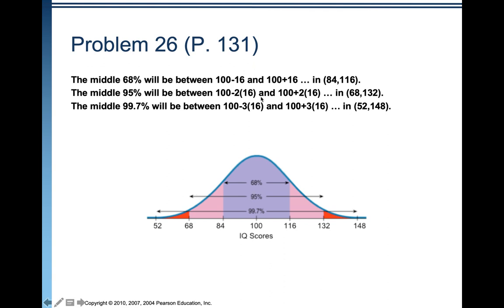Now we use this information to complete a picture of this distribution. Don't get intimidated by having to draw normal graphs — they don't have to be beautiful, as long as they're roughly bell-shaped and symmetric. The mean is 100. One standard deviation below and above captures 68% of the observations; two standard deviations captures 95%; and three standard deviations below and above captures 99.7% of the observations.